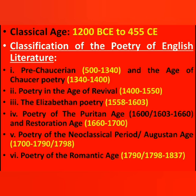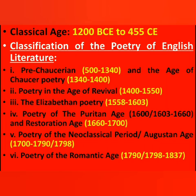First, we have to look into the history of English literature and know about the time span of the classical age. The classical age's time span was 1200 BCE to 455 CE. BCE means 'Before the Common Era' and CE means 'Common Era.' In English literature you will also find the term BC, which means 'Before Christ.'